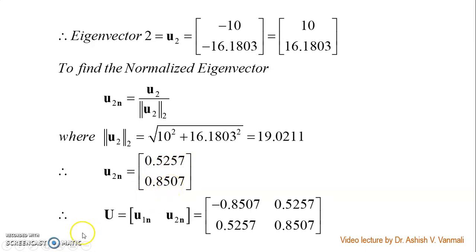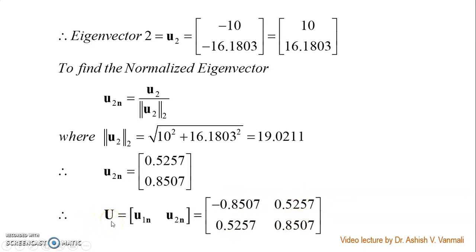Hence I can find matrix U, which is composed of normalized eigenvectors U1N and U2N. Now we have found matrix U. The same process will now be repeated for matrix V, but using A transpose·A.